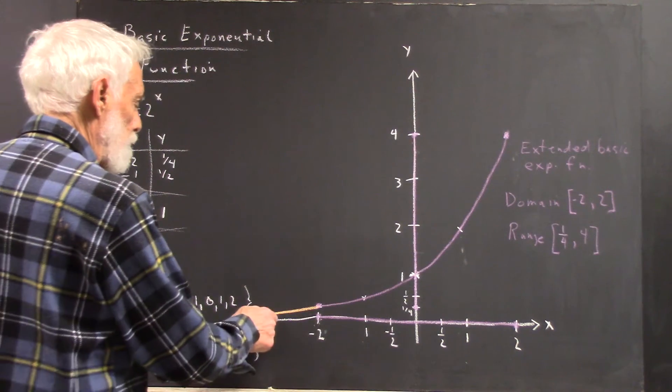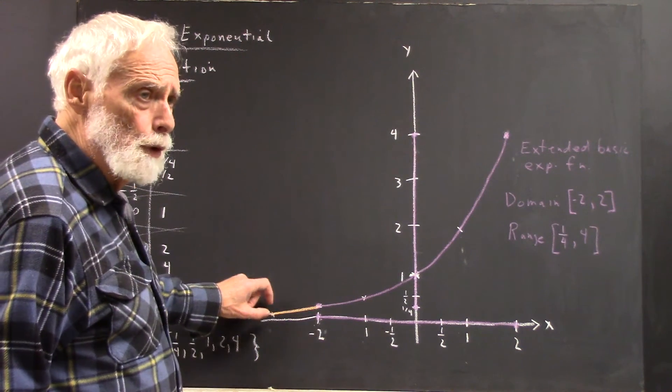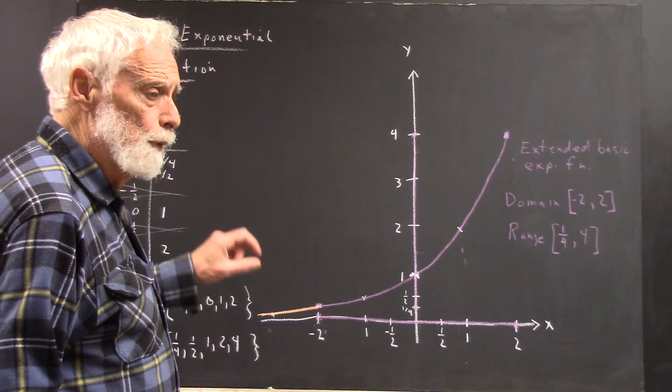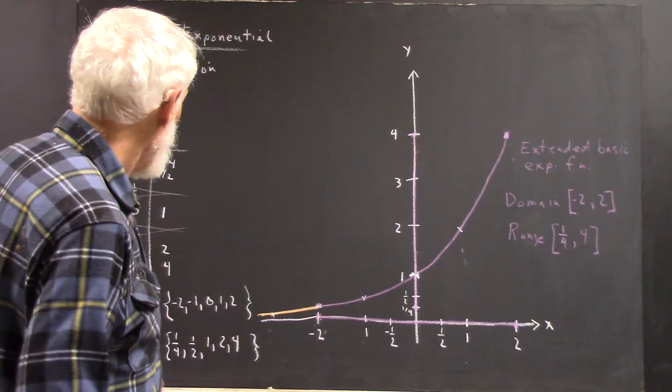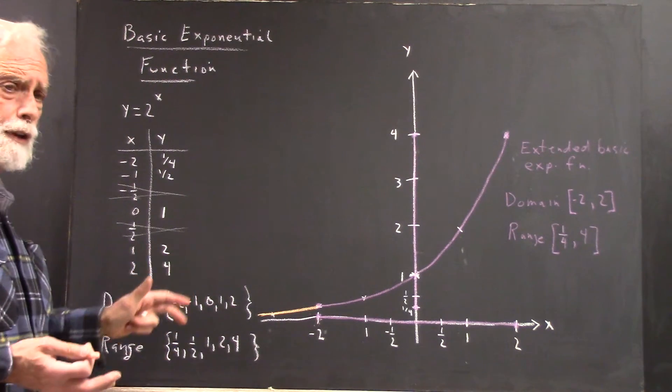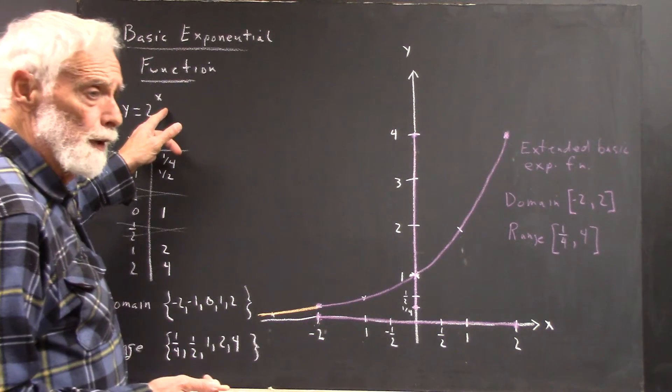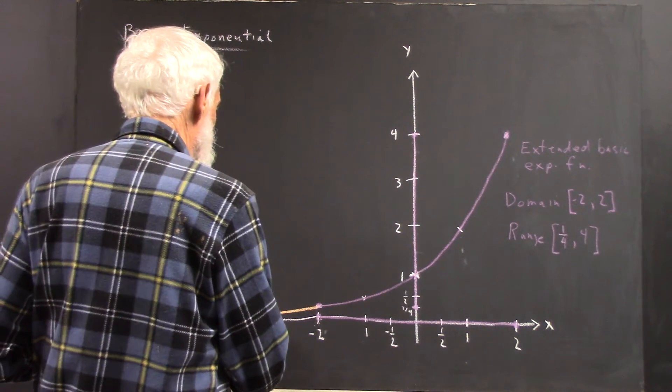So that this graph is going to pretty rapidly appear to merge with the x axis. It never will actually merge, but it's going to appear to merge. Because there's no limit to how close it can get, but it's never going to be zero. No matter what negative number you put in here, you never get zero.